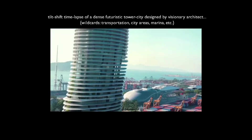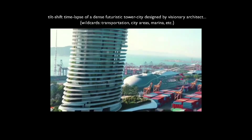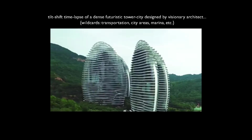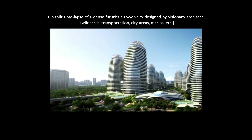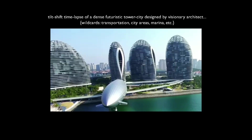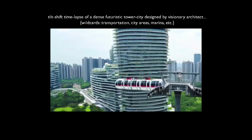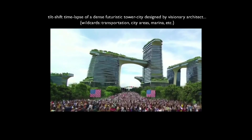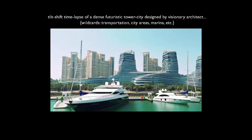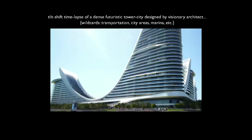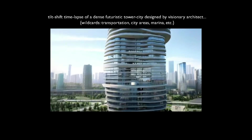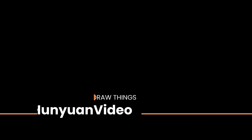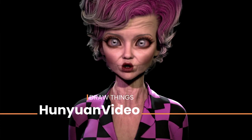Well hello children. I'm showing HunYuan video in Draw Things, the stable diffusion client for Mac and iOS. It's free on the app stores and can be downloaded directly from DrawThings.ai. There's also a gRPC server for Mac and Linux, but details are on Github — and this intro is becoming entirely too long. We've all got things to do.